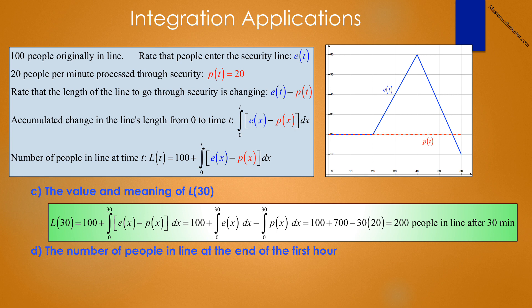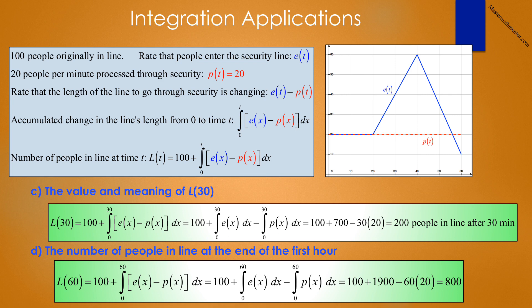Part d asks for the number of people in line at the end of the first hour. This is L(60), which equals 100 plus the integral from 0 to 60 of e(x) dx minus the integral from 0 to 60 of p(x) dx. That is 100 plus 1,900 people who had to wait minus 60 times 20 (1,200 people processed through security), giving 800 people in line at the end of the first hour. This number has increased dramatically because for the most part, people joining the line far exceeds those being processed.